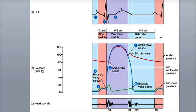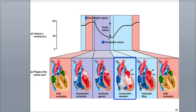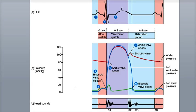As blood bounces off the closed aortic semilunar valve, a small bump called the dicrotic wave is visible on the aortic pressure curve, shown as the red line in the diagram. There's a short time period after the closure of both semilunar valves where there is no change in the volume of blood in both ventricles, because all four valves are now closed. No blood can flow into the ventricles from the atria because, even though the pressure of blood in the ventricles is dropping, the ventricular pressures are still higher than the atrial pressures. This time period is called isovolumetric relaxation of the ventricles.